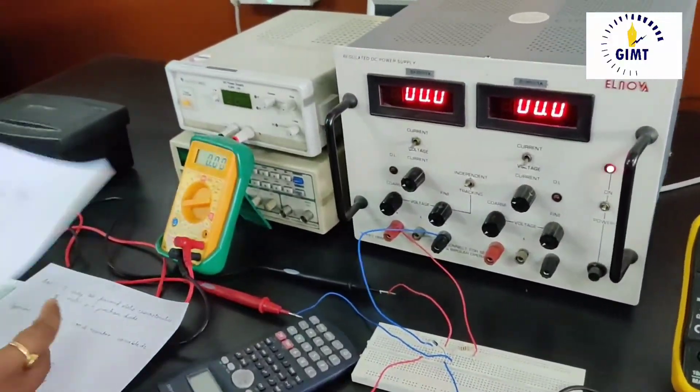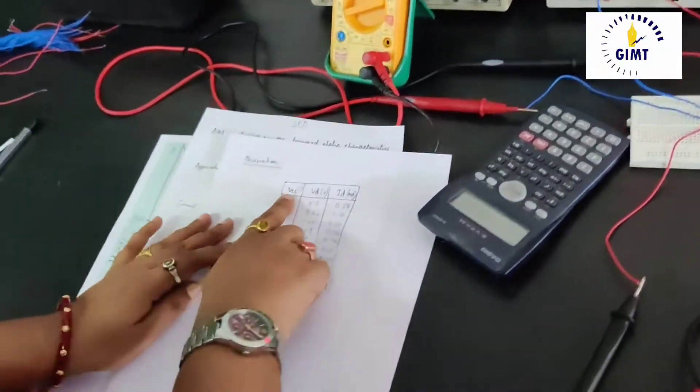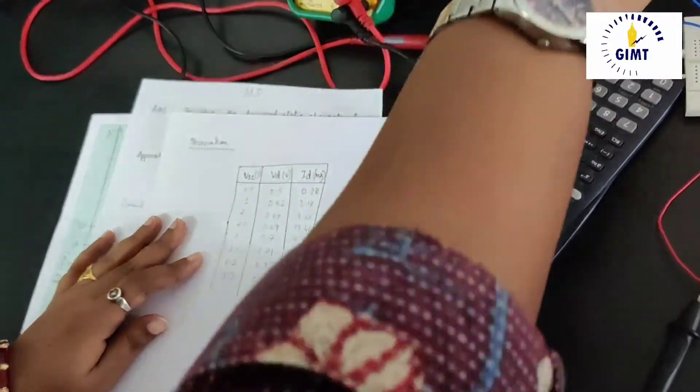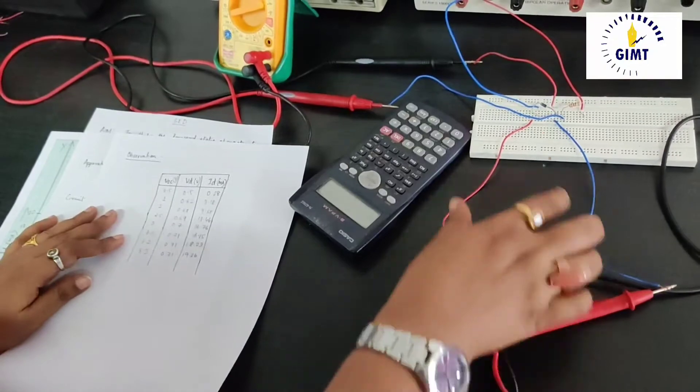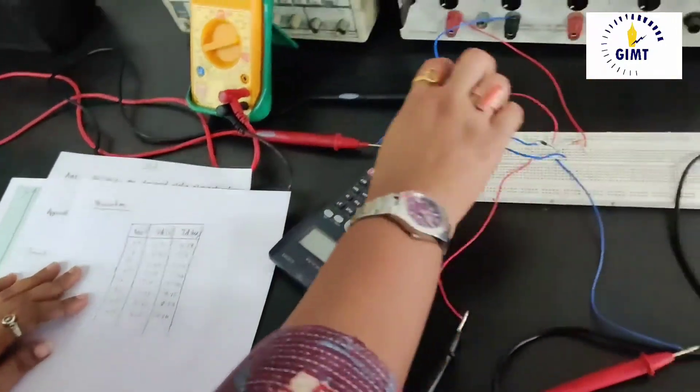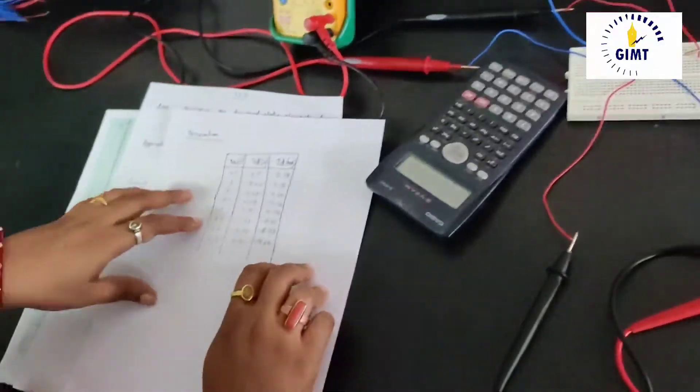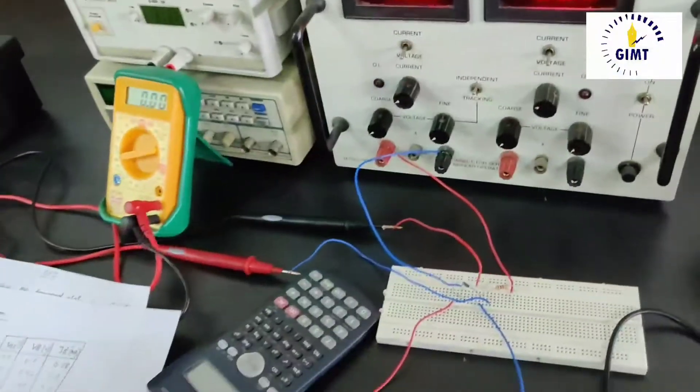Initially we have a table. The table has Vcc that is your variable power supply, Vd the diode voltage you will get across the diode and diode current ID in series from the diode. Initially we have taken some of the readings.